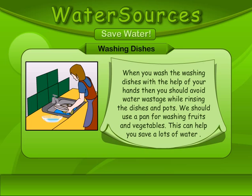Washing dishes. When you wash dishes by hand, avoid water wastage while rinsing dishes and pots. We should use a pan for washing fruits and vegetables. This can help you save a lot of water.